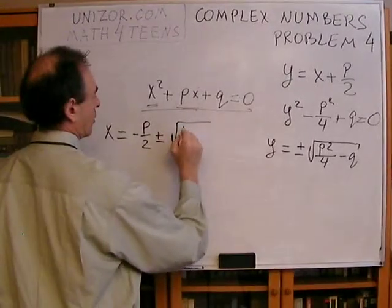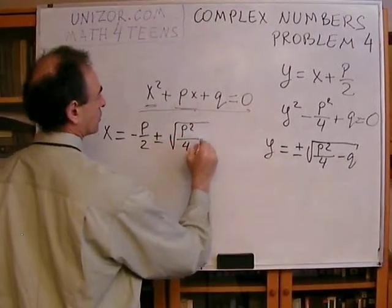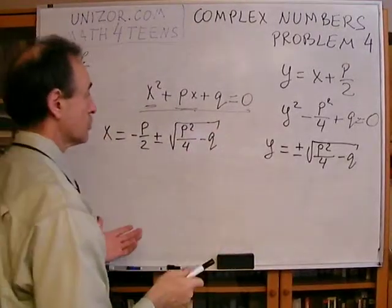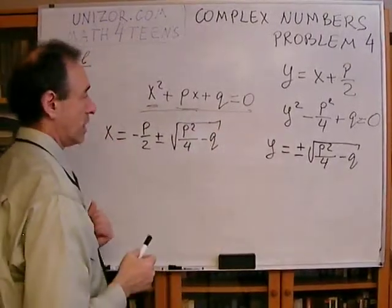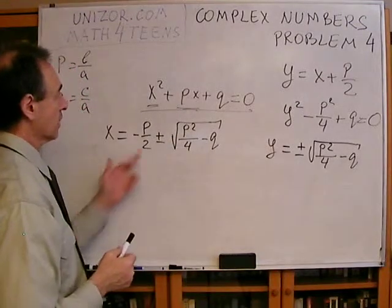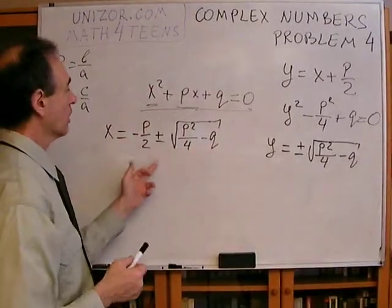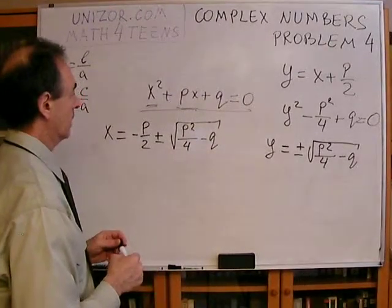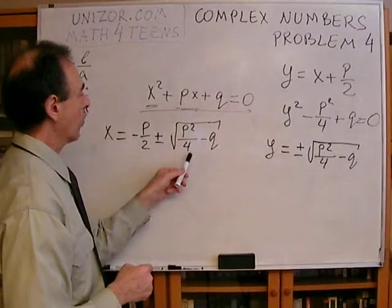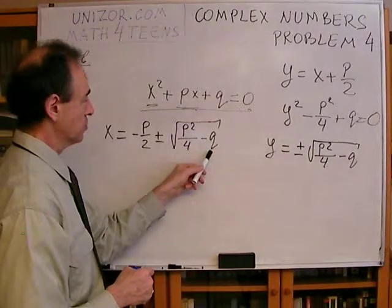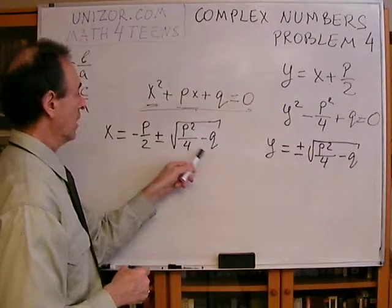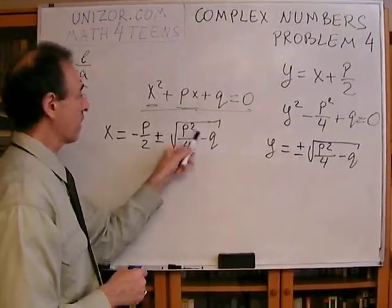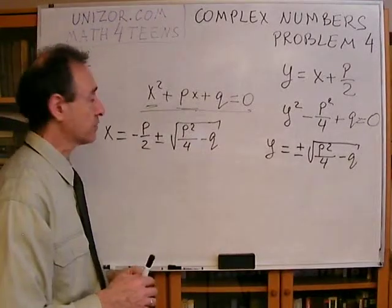So, this represents a general solution to our equation. So, if all of the coefficients are real, we basically see that if P squared over 4 minus Q is positive, then both roots are real numbers, because the square root is a real number from the positive number.